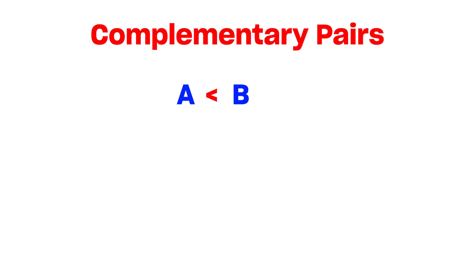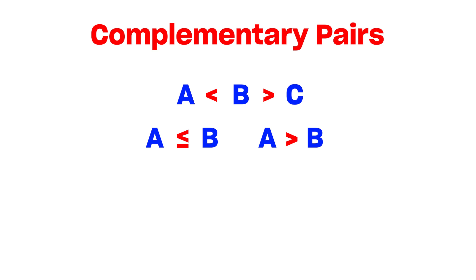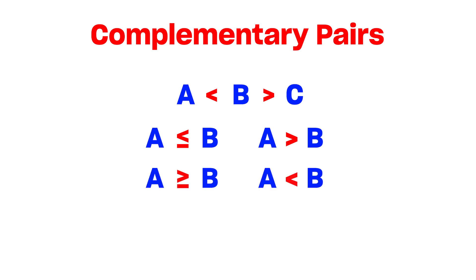Now, in greater than lesser than there is a complementary pair also. What is the complementary pair? Suppose A less than B and B greater than C — here there is no relation between A and C. But if you are given conclusions like A less than or equal to B and A greater than B, that is a complementary pair. Similarly, A greater than or equal to B and A less than B is also a complementary pair. So whenever there is no relation, if you are given one conclusion as less than or equal and one as greater, or one as greater than or equal and one as less than, those are complementary pairs. You have to follow these things while doing greater than lesser than.